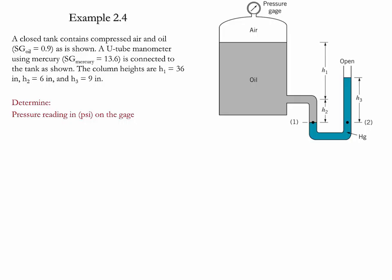We have three different column heights: H1 which is 36 inches, H2 which is 6 inches, and H3 which is 9 inches.